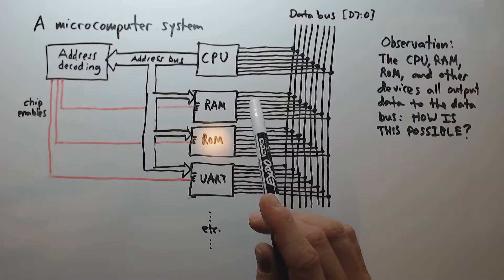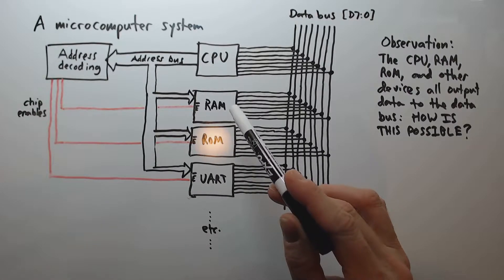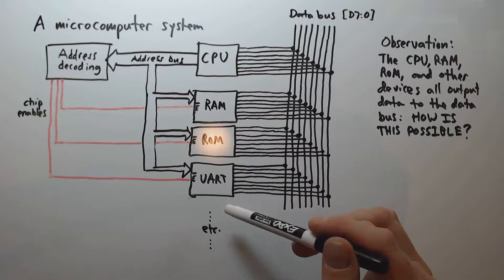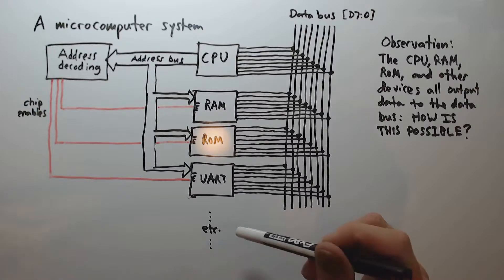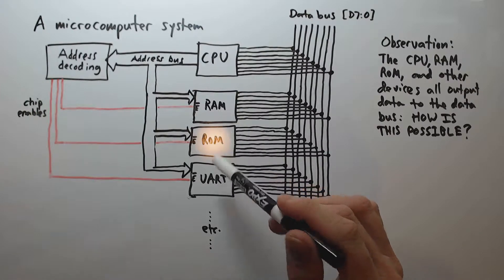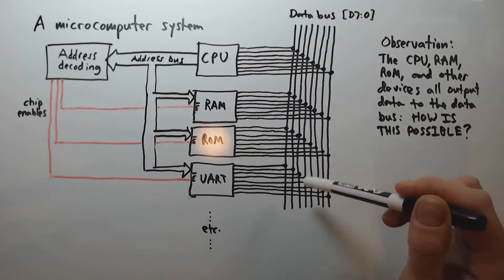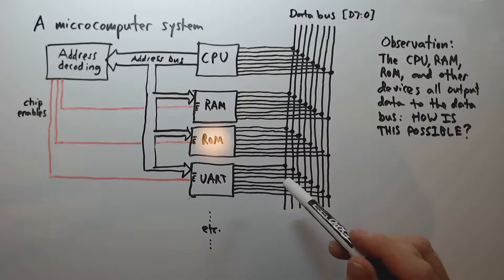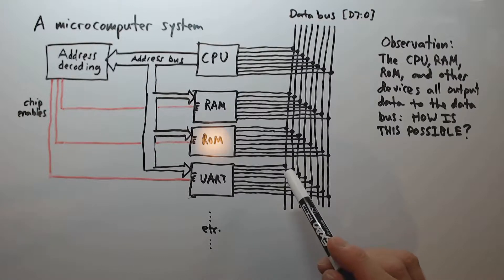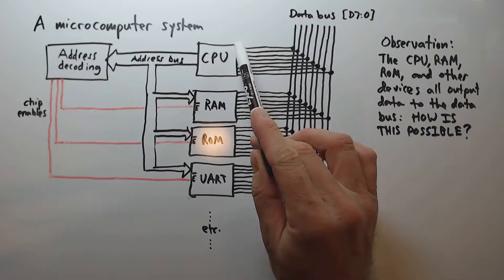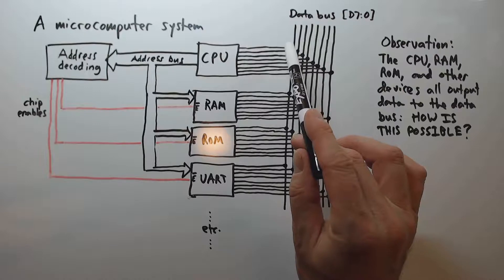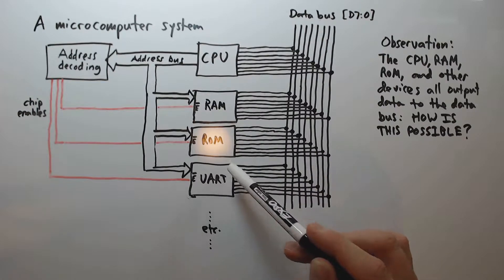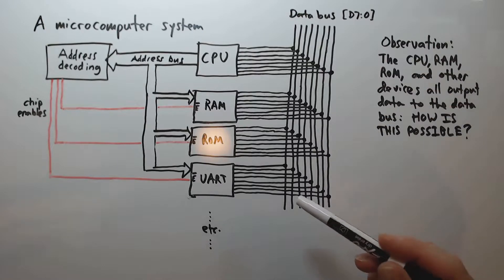Here is an overview of a typical 8-bit microcomputer system. We have our CPU and devices that it interacts with: a RAM device, a ROM device, a UART device for serial communications, and potentially other devices. The CPU exchanges information with these devices via the data bus, which is simply eight parallel connections — common circuit nodes that connect to common pins on the CPU and all the various devices participating in data bus communication.